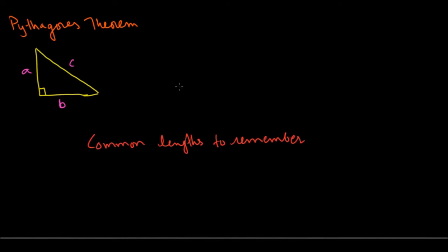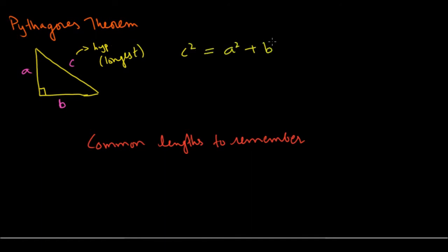Next, we'll look at the Pythagorean theorem. So we have a right triangle with sides A, B, C. We know C is the longest side — the hypotenuse. The Pythagorean theorem says that the hypotenuse squared is equal to the sum of the squares of the other two sides: C² = A² + B². This is very important — it comes in handy many times.